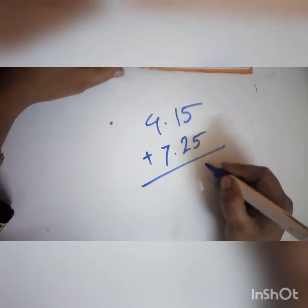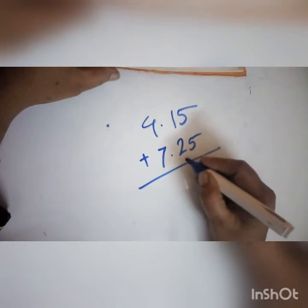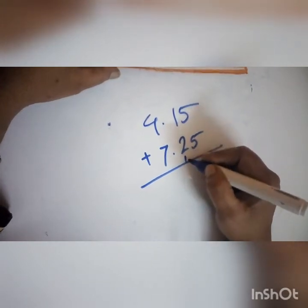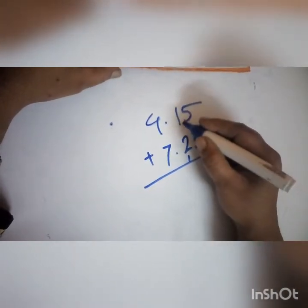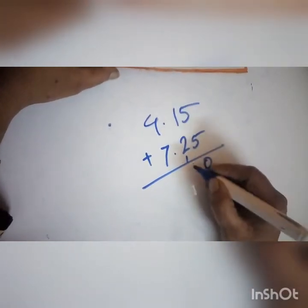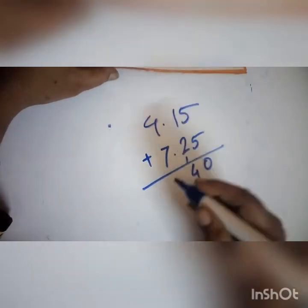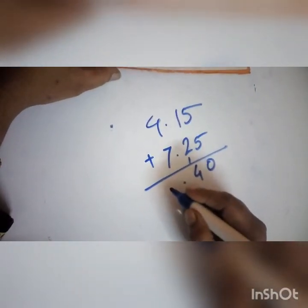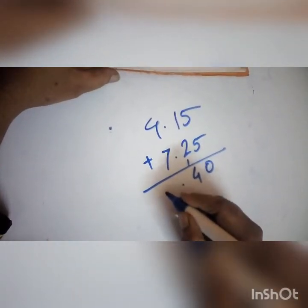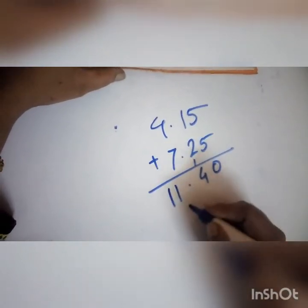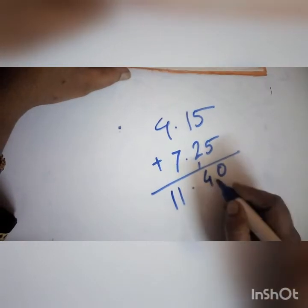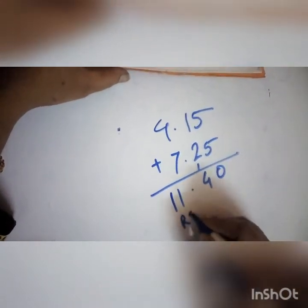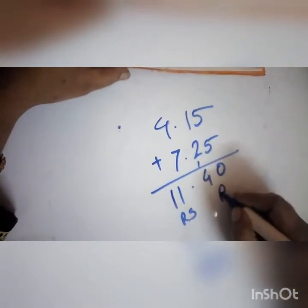5 and 5 is 10, carry 1. 2 and 3 and 4, that's 9 — so 90 paisa. Then 7 and 4 is 11, carry 1. So the answer is 11 rupees and 40 paisa. This column is rupees and this column is paisa.